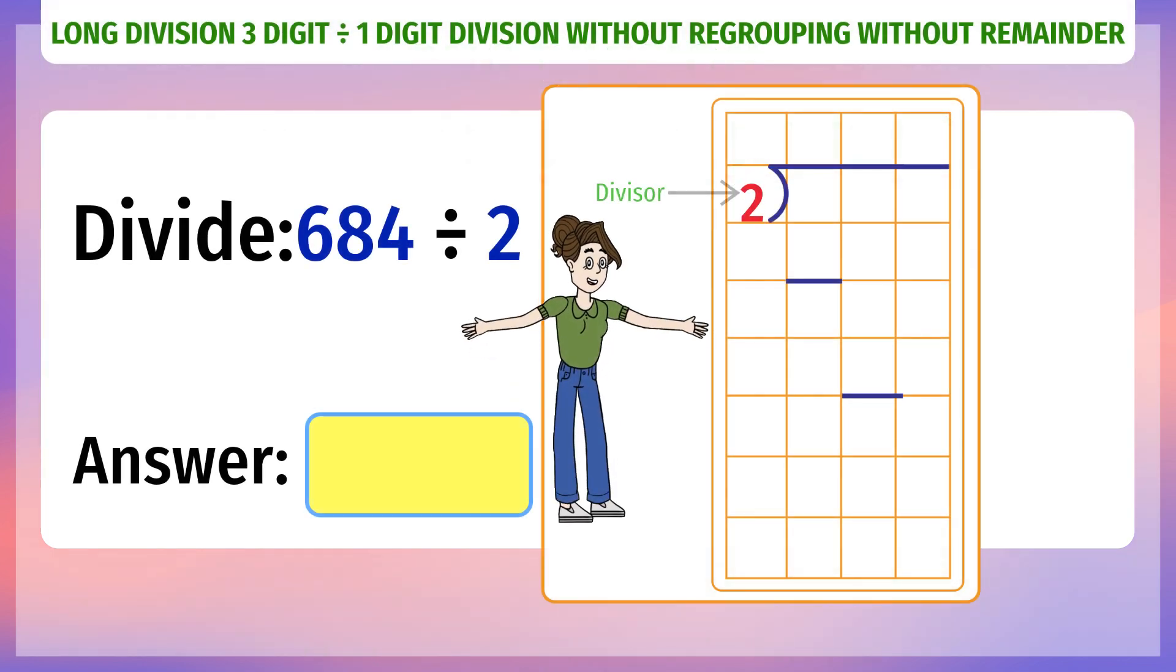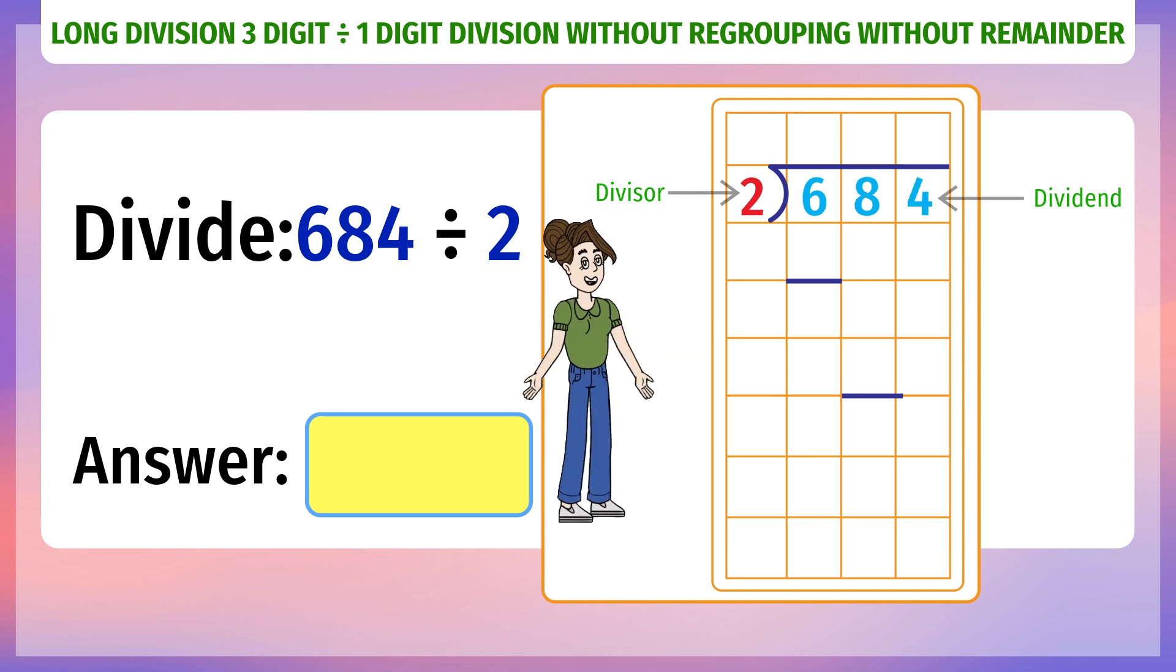Write the dividend and divisor in the format given. Take one digit of the dividend. Here 684 from the left to divide by divisor 2. If one digit of dividend is smaller than divisor, take two digits and so on.